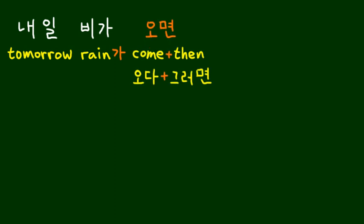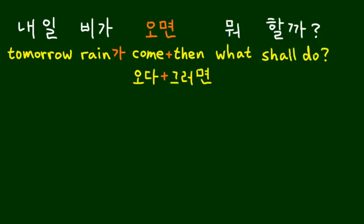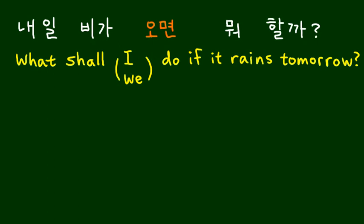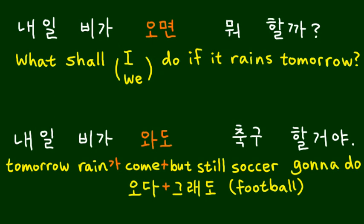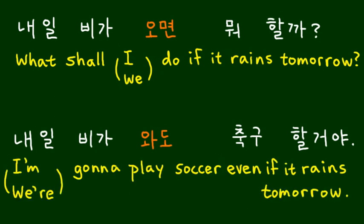Now let's compare the following two examples. 내일 비가 오면 뭐 할까? 내일 비가 와도 축구 할 거야. I just wanted to give you a comparison between 그러면 and 그래도.